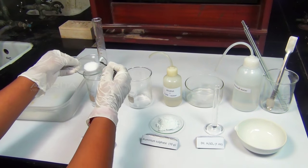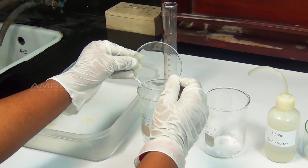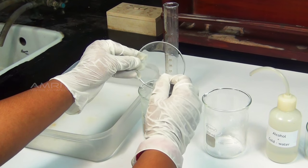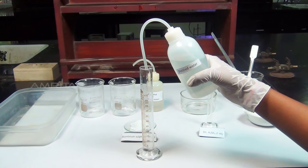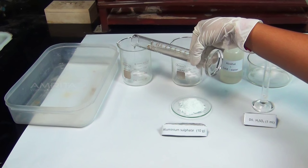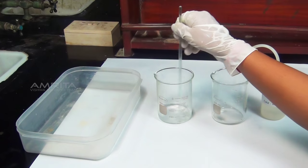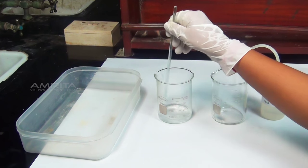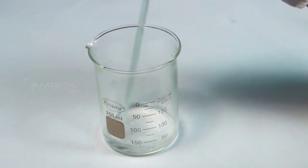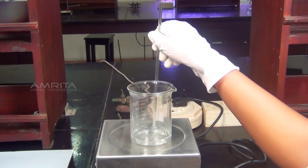Procedure: Take about 2.5g potassium sulphate crystals in a clean 250ml beaker. Measure about 20ml of distilled water in a measuring jar and pour it into the beaker containing potassium sulphate crystals. Stir the solution using a glass rod to dissolve the crystals. If the crystals do not dissolve, warm the solution to dissolve the crystals.